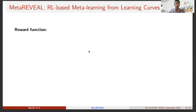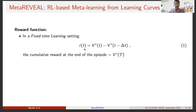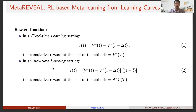In reinforcement learning, rewards are used as feedback from the environment to an agent for improving its policy. In fixed-time learning, the reward at time t is defined as the performance improvement compared to the previous time step. As a consequence, the cumulative reward at the end of the episode equals the best performance found within T. In anytime learning, the only difference is a weight defined by (1 - t̃), where t̃ is the normalized time on a log scale, used to adjust how important it is to find a good solution early. The cumulative reward at the end of the episode equals the area under the learning curve within T.